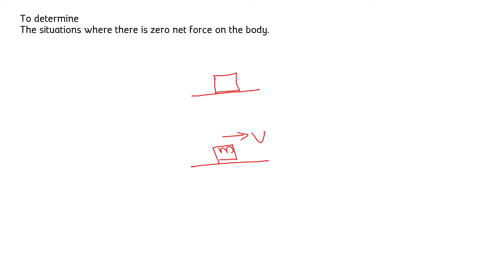The second law tells us that the rate of change of momentum — which is mass times change in velocity — with respect to time is directly proportional to force. From this we can write F = ΔP / ΔT.